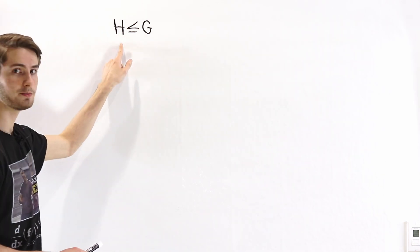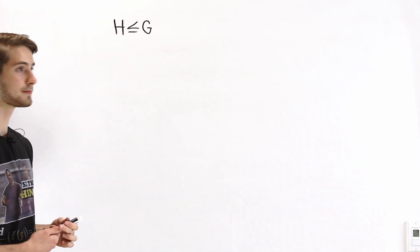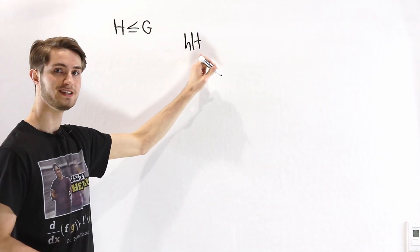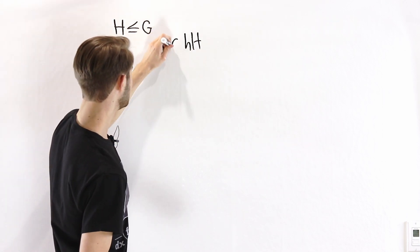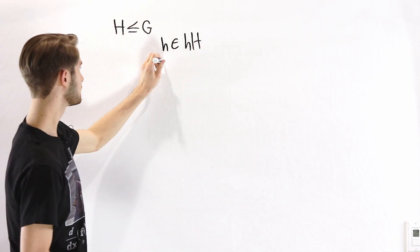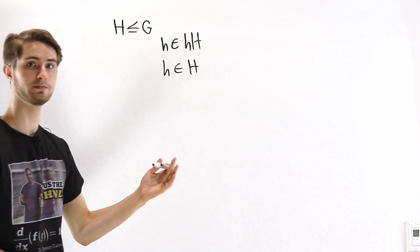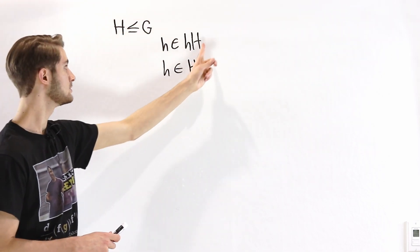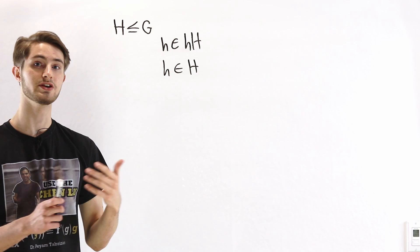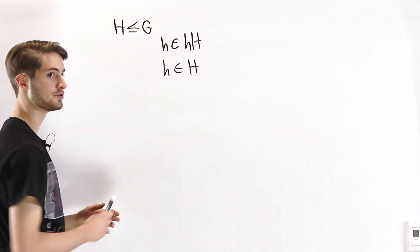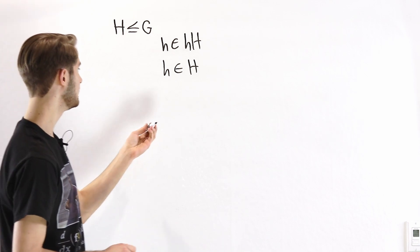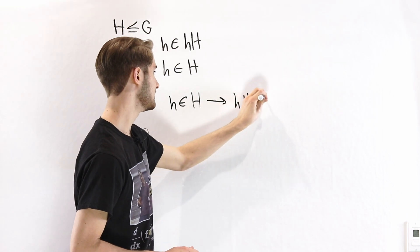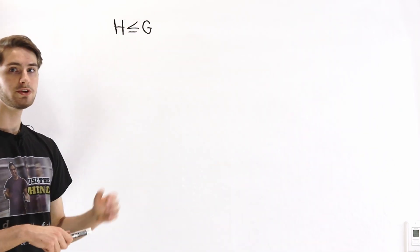Let's suppose we have a group G and a subgroup H of G. If we look at the coset H times H for some element in that subgroup, notice that H is an element of this coset, and we also know that H is an element of this subgroup by definition. That means H is in both of these cosets, which means they intersect. We know that cosets are disjoint, so the only way for these two cosets to intersect is if they are equal. Therefore, if H is in H, then this coset is equal to the original subgroup.